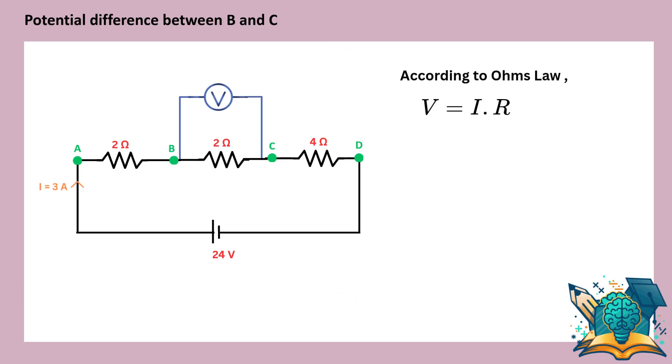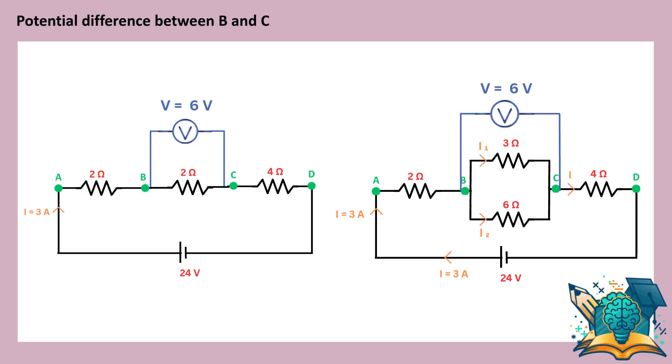And the total current in the circuit is 3 amperes. According to Ohm's law, the potential difference between points B and C is 6 volts. So, both the 3 ohm and 6 ohm resistors have a potential difference of 6 volts across them.